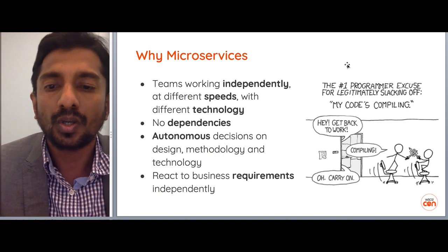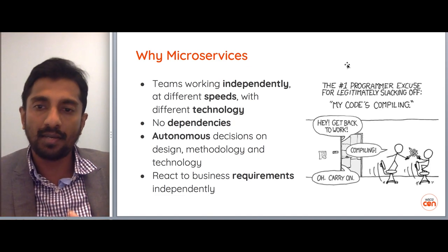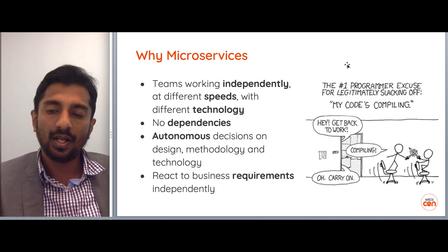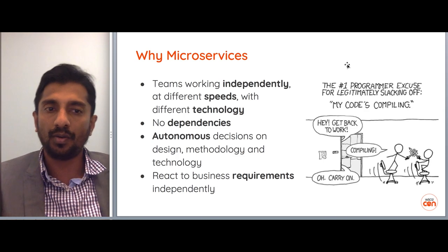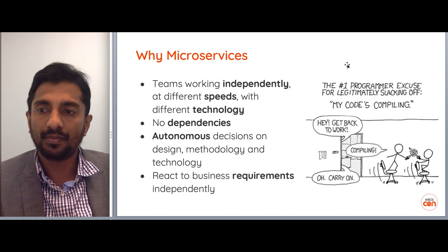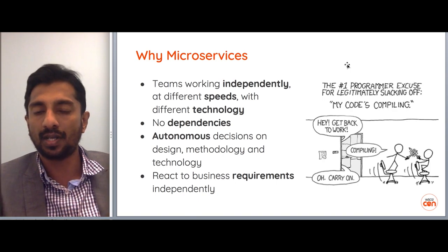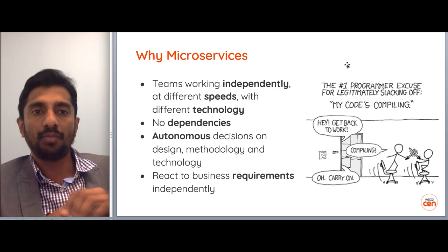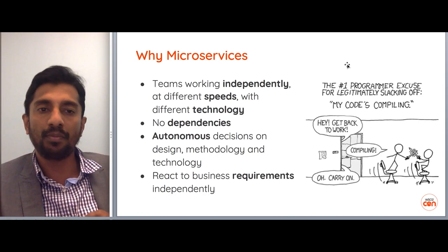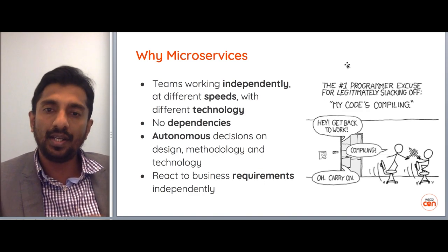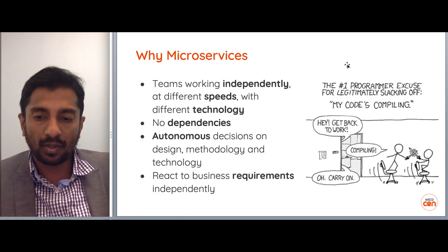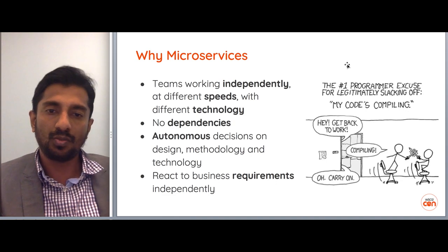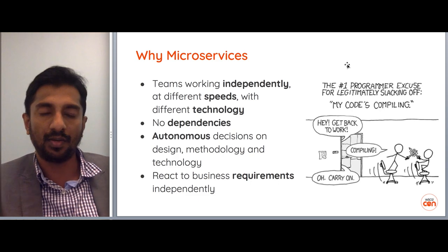Let's briefly revisit why microservices — I'll just touch on concepts relevant to data. Teams work independently at different speeds, some agile, some waterfall, using different technology stacks — some using Spring Boot, some Ballerina, some Node.js. No dependencies: teams want to build microservices independently without depending on or affecting other teams. If you make a schema change, you don't want to break two other teams that rely on the same service.